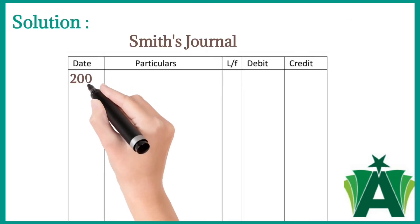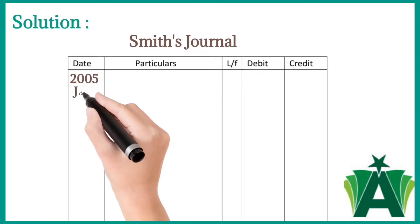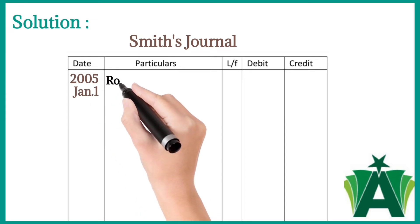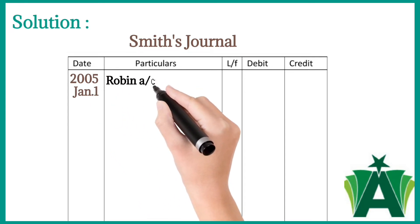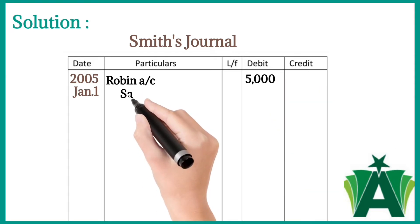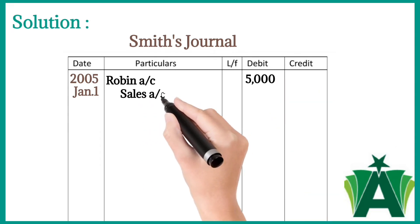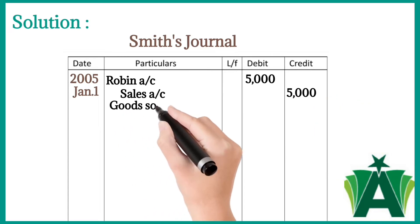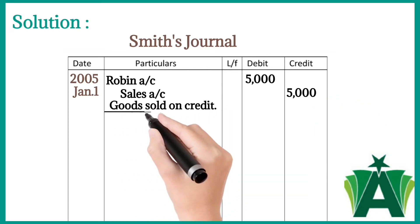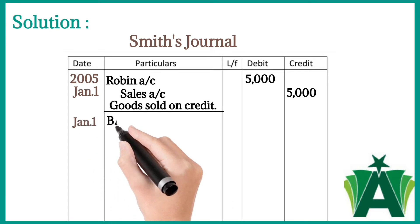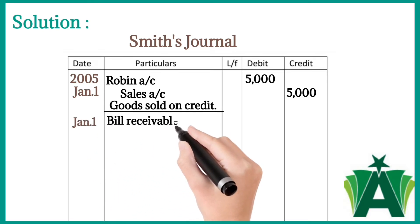2005, January 1: sold goods to Robin for five thousand dollars. Robin account is debited with five thousand dollars because Robin became a debtor and there is an increase in assets. Sales account is credited because of the increase in revenue. On the same date, Smith drew a bill on Robin at two months; Robin accepted and returned it to Smith.